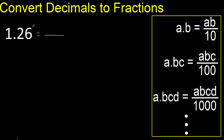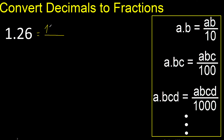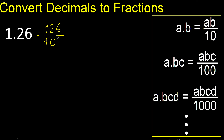First, all the number without point — like this. Here, always number 1. After the point there are 2 numbers, therefore 2 zeros.